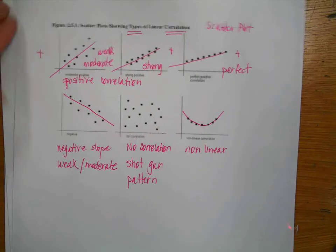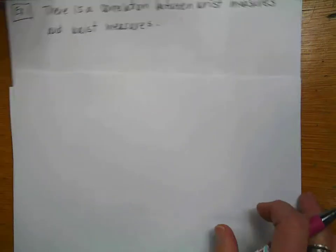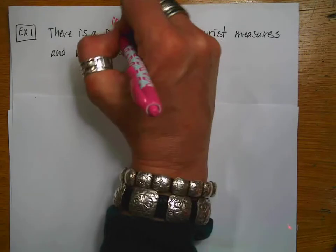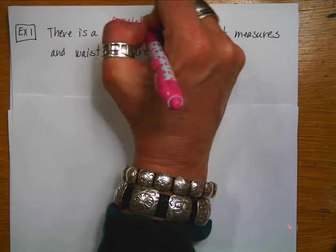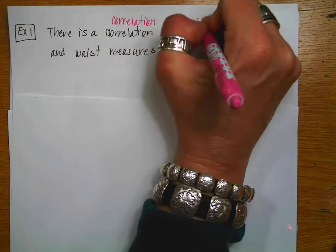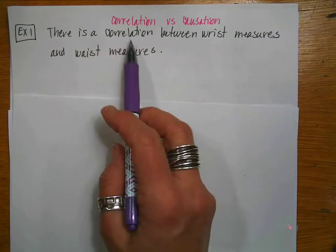So just because we have a set of data, it doesn't mean that they're all going to be linear. Sometimes they could be non-linear. The next thing I have for us are some examples. And we're going to talk about correlation versus causation. Because remember, just because two things are correlated doesn't necessarily mean that they are causes for one another.